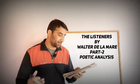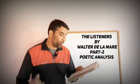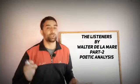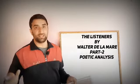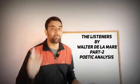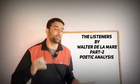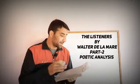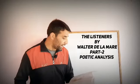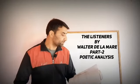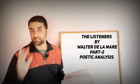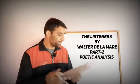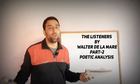Alliteration کا بھی کافی use ہوا ہے اس poem میں۔ Alliteration میں ایک consonant sound ایک line میں دو تین words کے شروع میں آتا ہے۔ مثلاً 'the forest's ferny floor' — یہاں 'f' sound تین words میں consecutively آیا ہے۔ اس کے علاوہ line number 25 میں 'for he suddenly smote' — یہاں 's' consonant sound دو words کے beginning میں آیا ہے — یہ بھی alliteration ہے۔